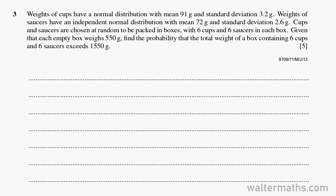Weights of cups have a normal distribution with mean 91 grams and standard deviation 3.2 grams. Weights of saucers have an independent normal distribution with mean 72 grams and standard deviation 2.6 grams. Cups and saucers are chosen at random to be packed in boxes with 6 cups and 6 saucers in each box. Given that each empty box weighs 550 grams, find the probability that the total weight of a box containing 6 cups and 6 saucers exceeds 1,550 grams.